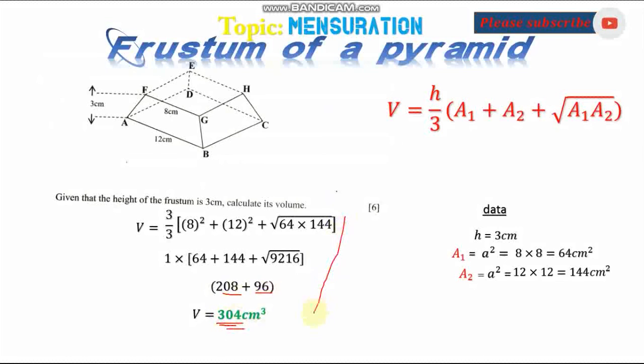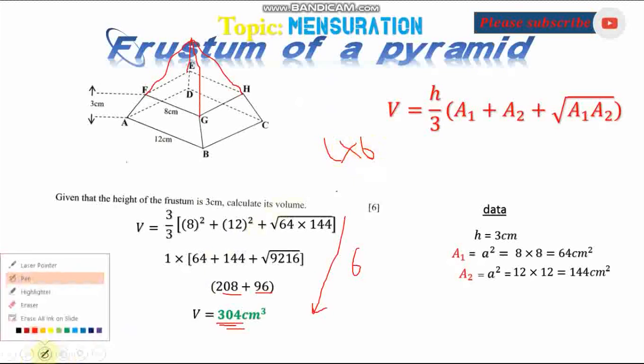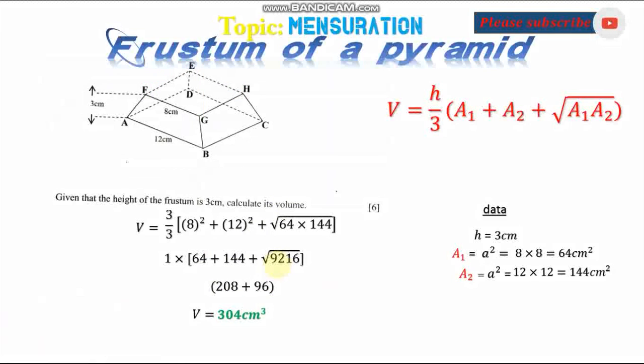From here up to there, that is your six marks. No need for you to start extending this, extending up to there, then calculating the height. No need for all that. You just identify the base, is it a square or a rectangle, then calculate the areas. If it was a rectangle, area equals l times b, then multiply and substitute where you're supposed to substitute.